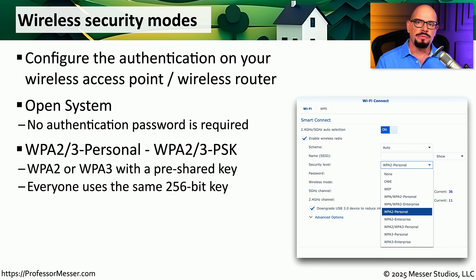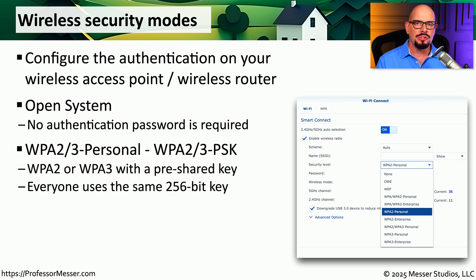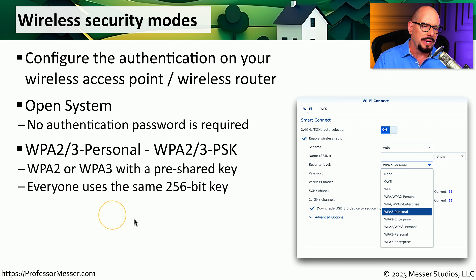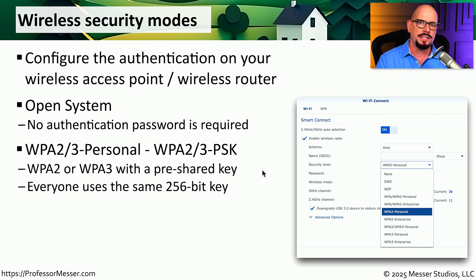If you're setting up an access point for personal use, especially at home, you're probably configuring it with WPA2 or WPA3 encryption, and assigning a password or passphrase to help protect that network. If anybody visits you, you simply provide them with that password and they're able to connect. We refer to this password as a pre-shared key — a key you provide to anyone who needs to connect, and everybody on the wireless network is using the same key.